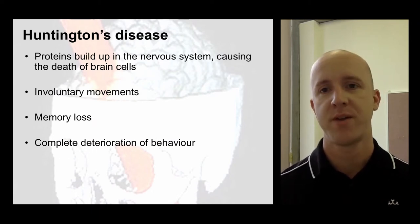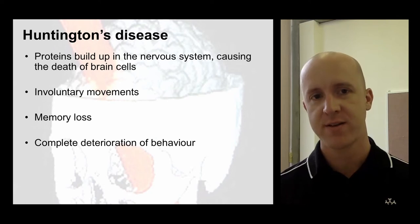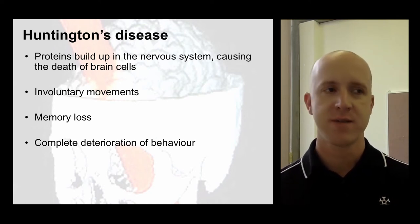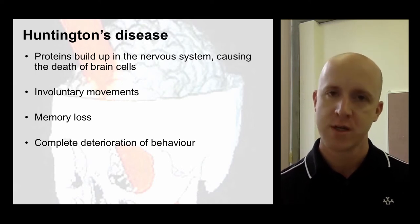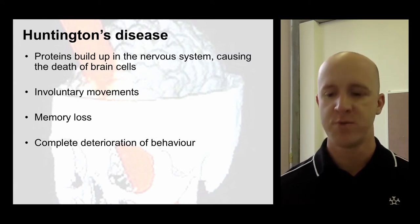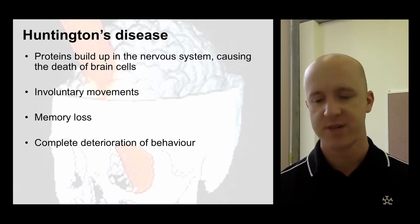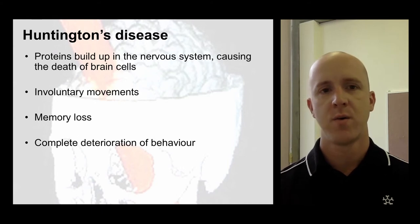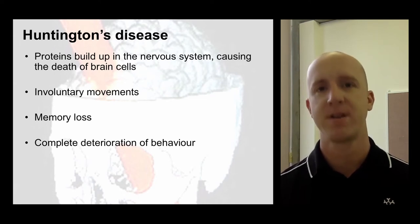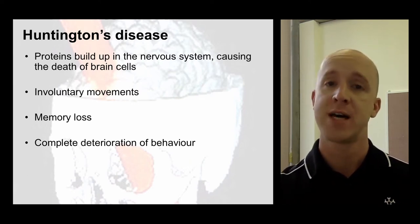In Huntington's, proteins build up in the nerve cells causing the death of particular brain cells. It's an obviously wide-ranging disease affecting a number of areas. Involuntary movements are a key part of it, and as it progresses, you move toward relative paralysis — you're still capable of movement, it's just hard to actually organise them. You get memory loss and behaviour gradually degenerates. That's one way in which we know that the basal ganglia regulates our ability to move in a voluntary, planned way.